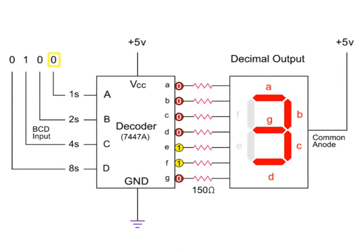Zero, one, zero, zero displays a four. Zero, one, zero, one displays a five. An input of zero, one, one, zero is needed to display a six. Zero, one, one, one for seven.